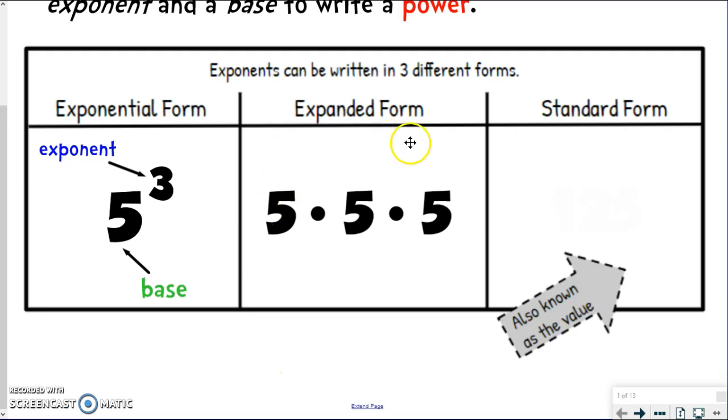So if I'm writing in expanded form, exponential form is with the base and the exponent. Expanded form is showing what is this actually meaning? It means 5 times 5 times 5. So I'm repeatedly multiplying the base, which is 5, and I'm doing it three times.